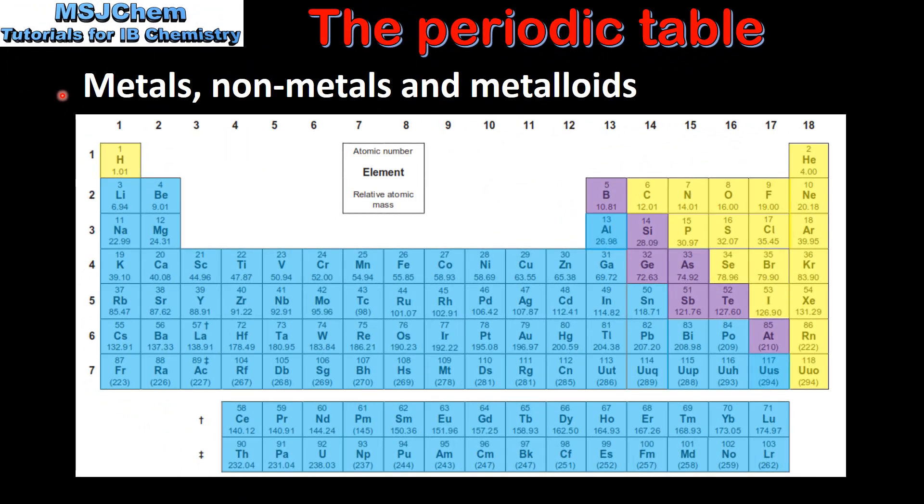Next we look at the position of the metals, the nonmetals and the metalloids in the periodic table. The elements shaded in light blue are all metals. As you can see, the majority of the elements in the periodic table are metals.